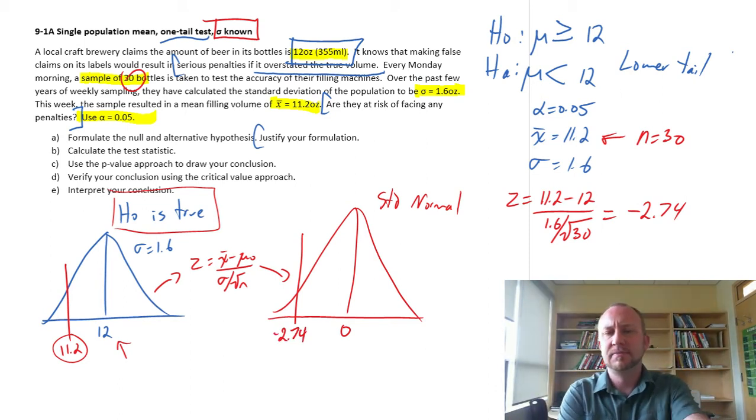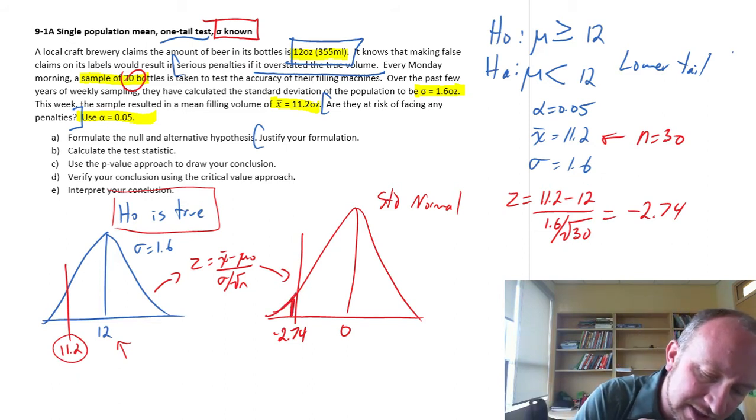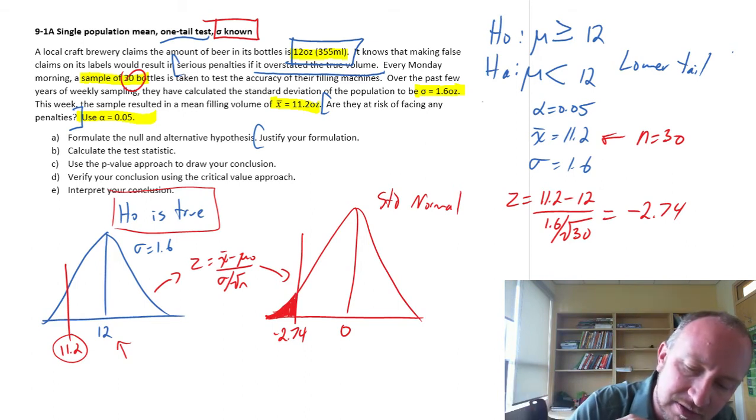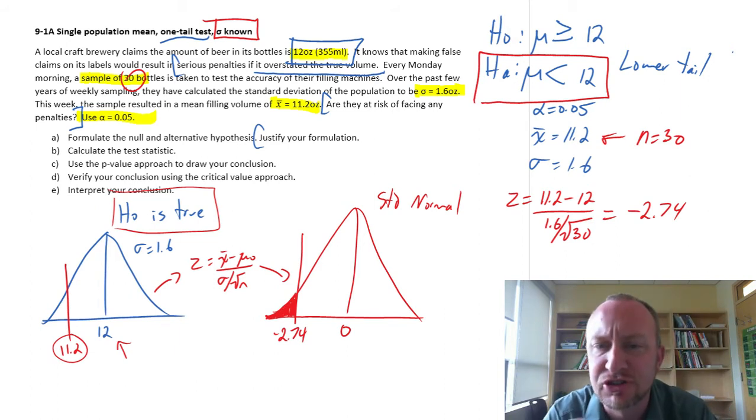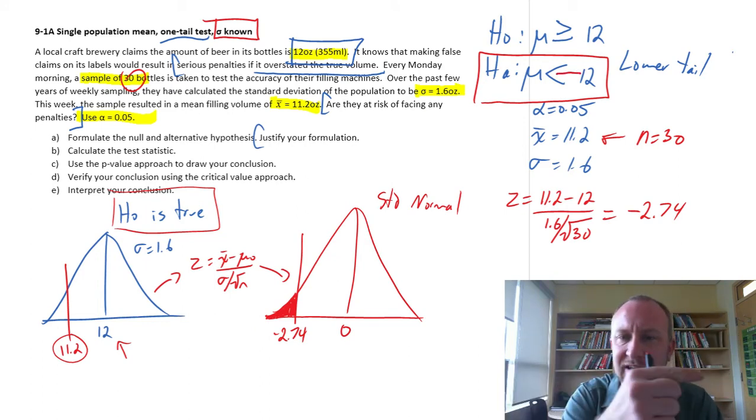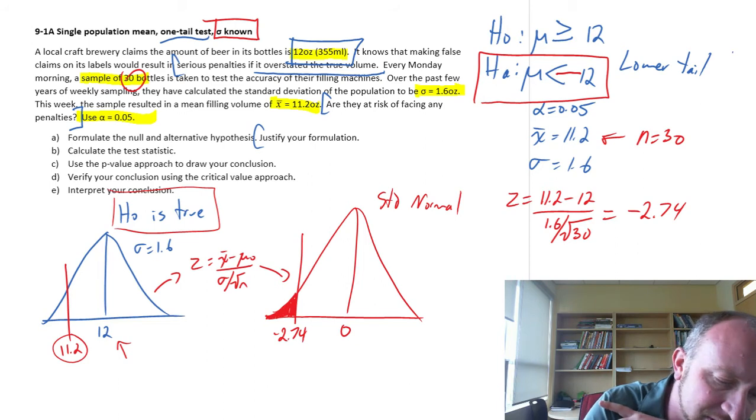Our next step is, what's the probability that corresponds with that test statistic? We want to know what's the probability of obtaining a test statistic at least as unlikely as the one that the sample has just provided us. We want the area under the curve to the left. The reason in this case I'm going to the left is because we're doing a lower tailed test. This is what we're working on now, part c: use the p-value approach to draw our conclusion.